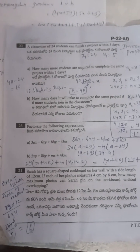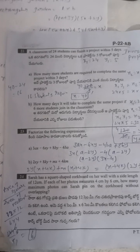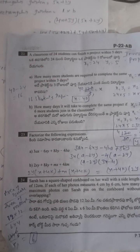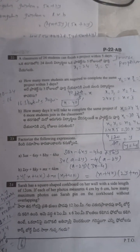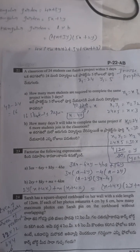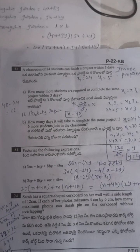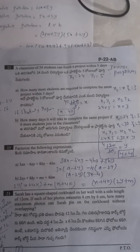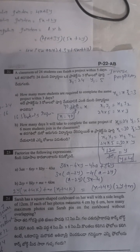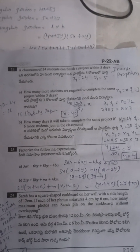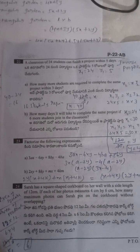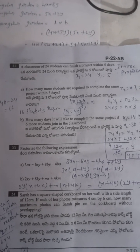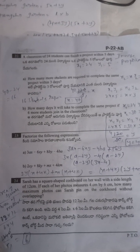Next: how many days will it take to complete the same project if 6 more students join? Total students equals 24 plus 6 equals 30. Using inverse proportion: X1 equals 24, Y1 equals 5, X2 equals 30, Y2 equals Y. Formula: X1 times Y1 equals X2 times Y2, so 24 into 5 equals 30 into Y, giving Y equals 120 by 30 equals 4 days.